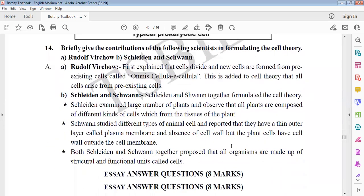And next, cell theory. Formulators of cell theory - Rudolf Virchow, Schleiden and Schwann. Rudolf Virchow first explained cell divide. All the new cells will be forming from pre-existing cells. In Latin, omnis cellula e cellula. This is a point of cell theory. Schleiden and Schwann together formulated the cell theory.